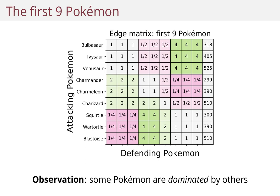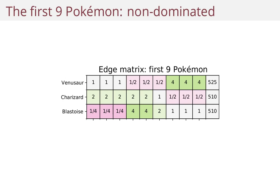So we can get rid of Bulbasaur completely. And the same logic applies to Ivysaur and Venusaur, where Venusaur dominates Ivysaur. If we remove all Pokemon which are dominated by others, we're just left with three Pokemon here: Venusaur, Charizard, and Blastoise.